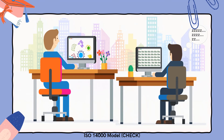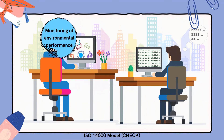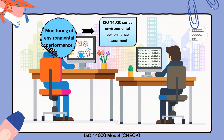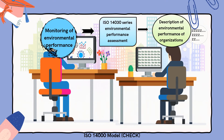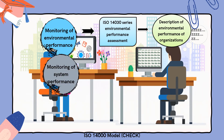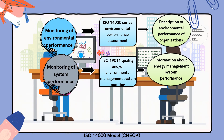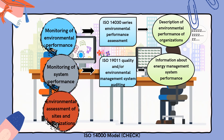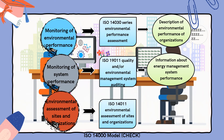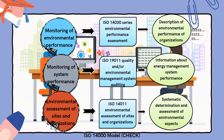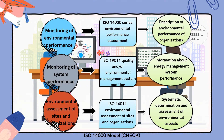For the ISO 14000 model Check phase, it will help monitoring of environmental performance using ISO 14030 Series Environmental Performance Assessment to describe the environmental performance of organizations. Next, monitoring of system performance using ISO 19001-1 Quality and/or Environmental Management System Auditing to get information about energy management system performance. Moreover, environmental assessment of sites and organizations using ISO 14001-1 Environmental Assessment of Sites and Organizations for systematic determination and assessment of environmental aspects.